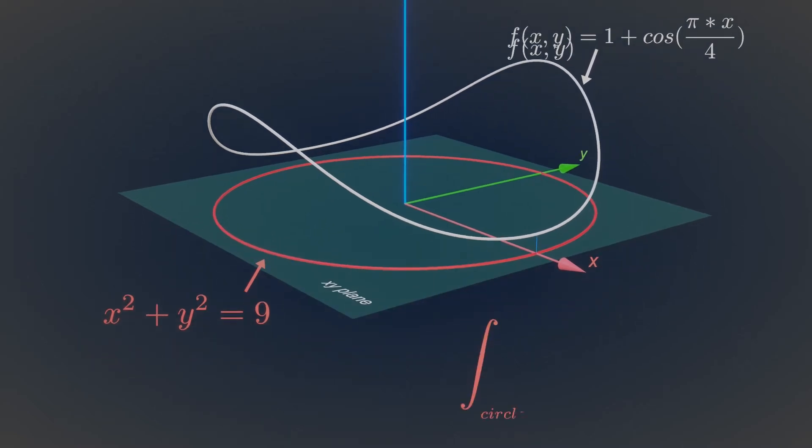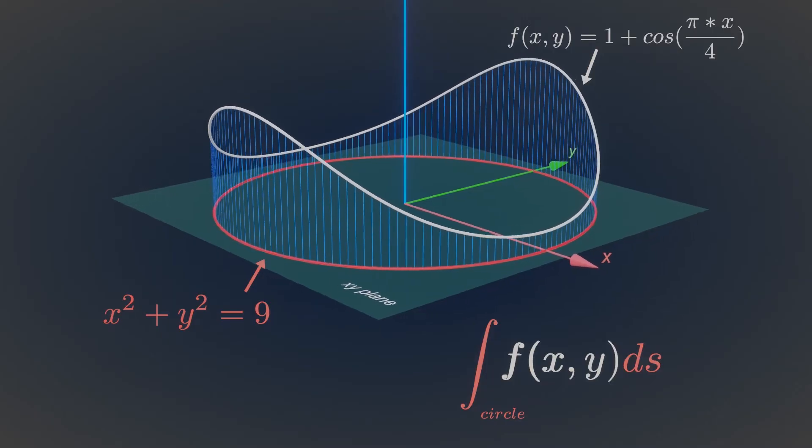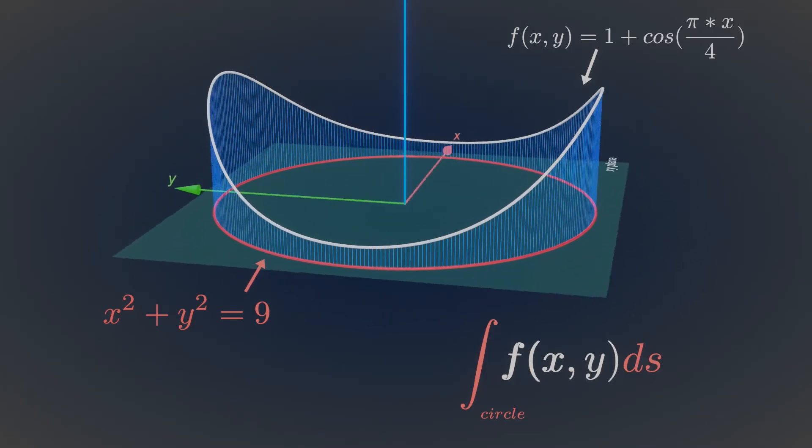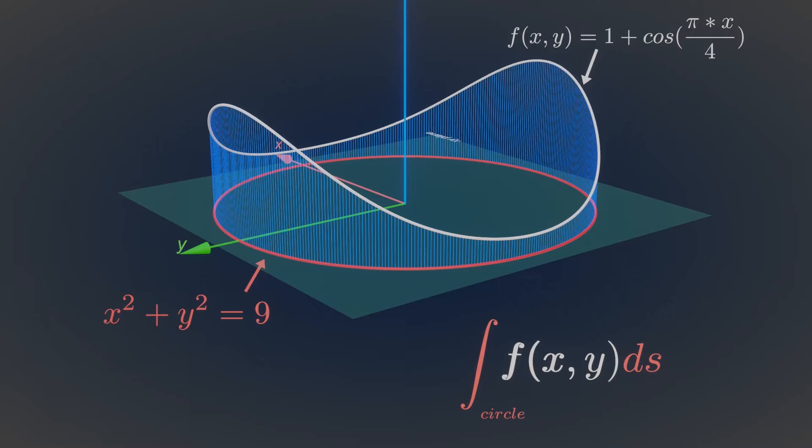The line integral of this function along the curve gives the area of this blue surface. Just imagine adding those tiny sticks along the path of a circle.